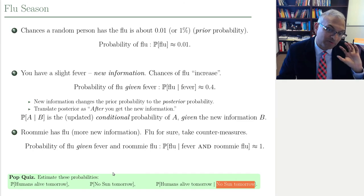While you ponder these real-world examples, let's set up a formal infrastructure for computing conditional probability, which is interpreted as the update of a probability when new information arrives. We're going to do this on the board.